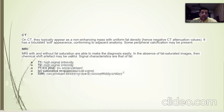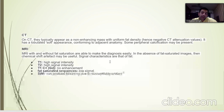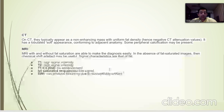On CT, intracranial lipomas typically appear as a non-enhancing mass with uniform fat density and negative CT attenuation value, with a lobulated soft mass appearance conforming to adjacent anatomy and possible peripheral calcification. On MRI they appear T1 hyperintense and T2 hyperintense with no post-contrast enhancement. On fat-sat they are hypointense, and there may be blooming on SWI due to susceptibility artifact.